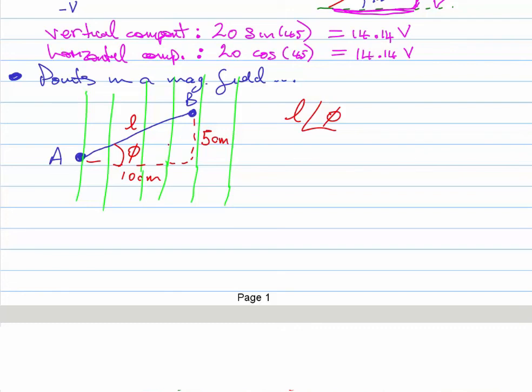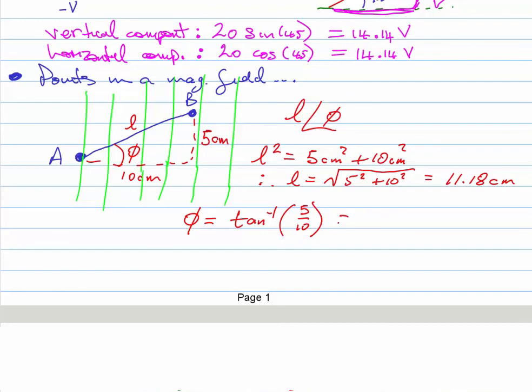It's just basic Pythagoras so we're going to write l squared equals five centimeters squared plus 10 centimeters squared. Therefore l is the root of the right hand side, so it's the root of five squared plus 10 squared. If you do all the sums on that you get l equals 11.18 centimeters. And an easy way to work out that angle is the angle equals tan to the minus one of the vertical over the horizontal, so 5 over 10 which is 0.5. Do that on your calculator and you should have 26.57 degrees.